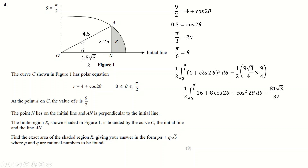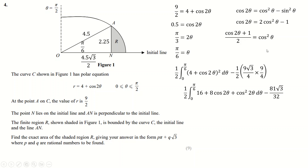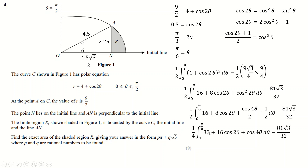We expand r squared, which is (2 plus cos 2θ) squared, giving 4 plus 4 cos 2θ plus cos squared 2θ. For cos squared 2θ, I use the double angle formula cos 2θ equals 2cos squared θ minus 1, rearranged to cos squared θ equals (1 plus cos 2θ)/2, replacing θ with 2θ to get cos squared 2θ equals (1 plus cos 4θ)/2. I factor out a half and combine terms, giving 33/2 for the constant, 16 cos 2θ, and (1/4) cos 4θ. Everything is now integrable.